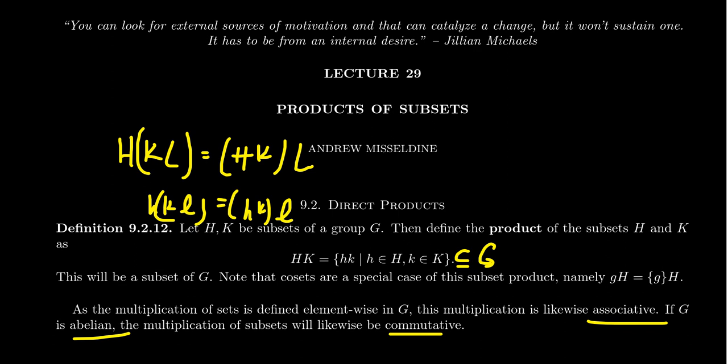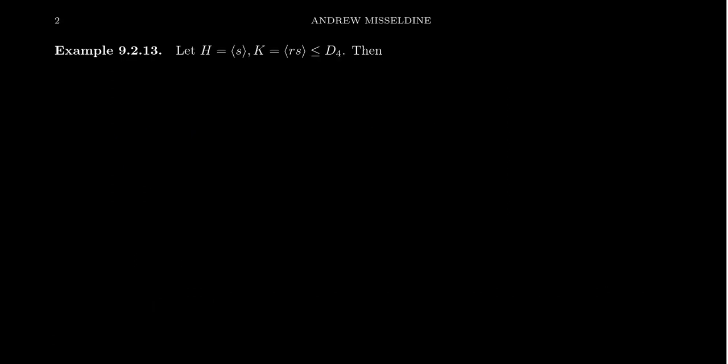What we'll see in some examples is that sets could potentially commute even though individual elements might not commute. Let's take the dihedral group D4 and take two subsets. We're going to take the cyclic subgroup generated by s, the reflection across the x-axis, and the cyclic subgroup generated by rs, where r is a 90-degree rotation. When it comes to this Frobenius product, the subsets do not have to be subgroups, although those are subsets of particular importance.